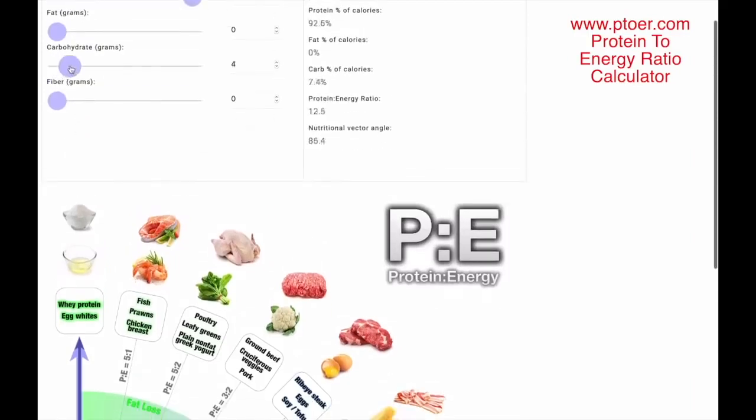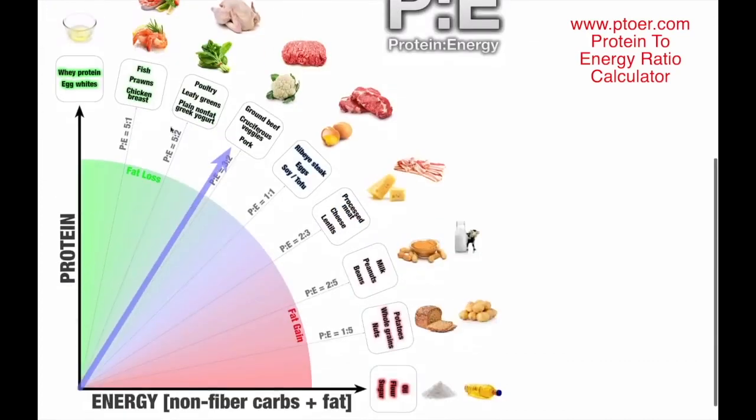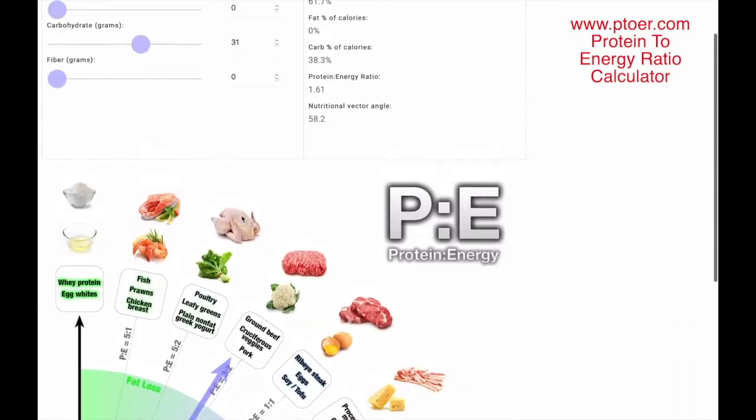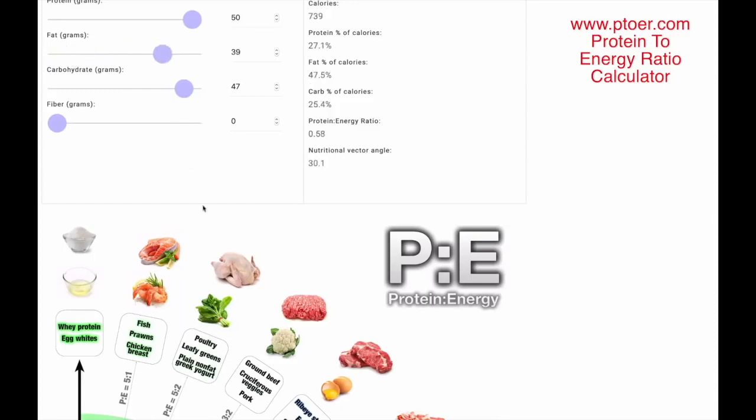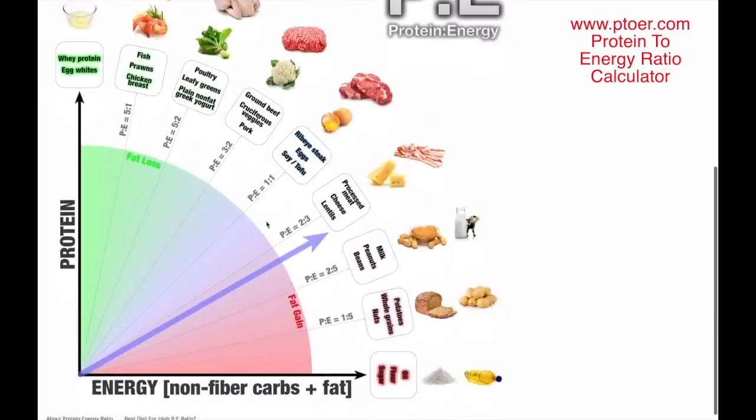Let's increase the carbs. That purple arrow starts to drop down and the green area is fat loss and the red area is fat gain. So the more energy you take in, that's the carbohydrates, that arrow starts to drop down. Add in some extra fat and now it's down to here in the fat gain area.